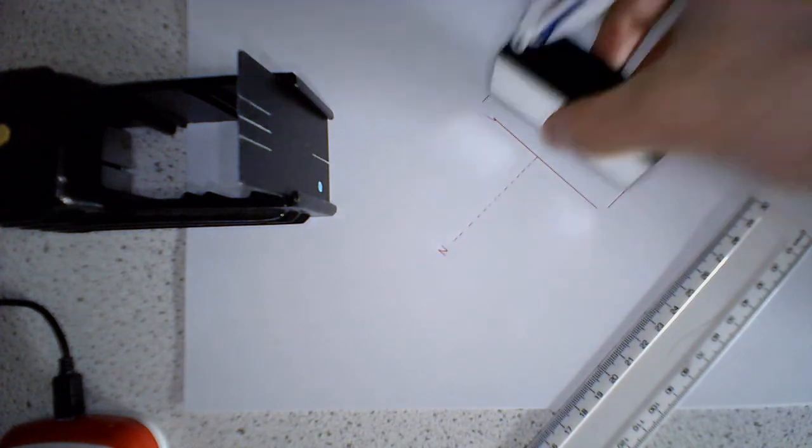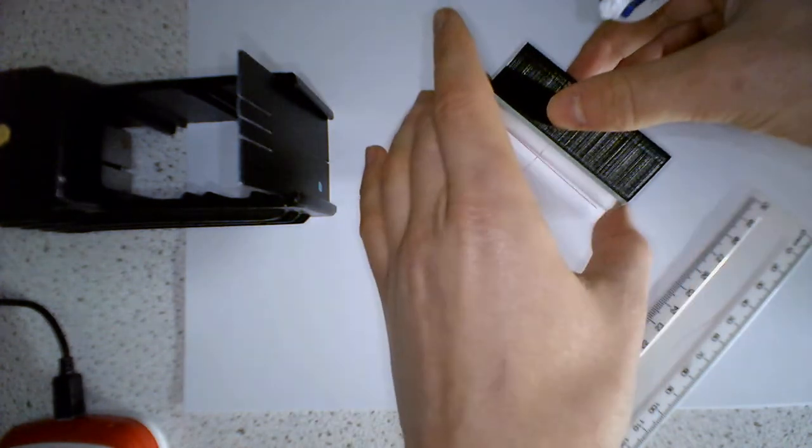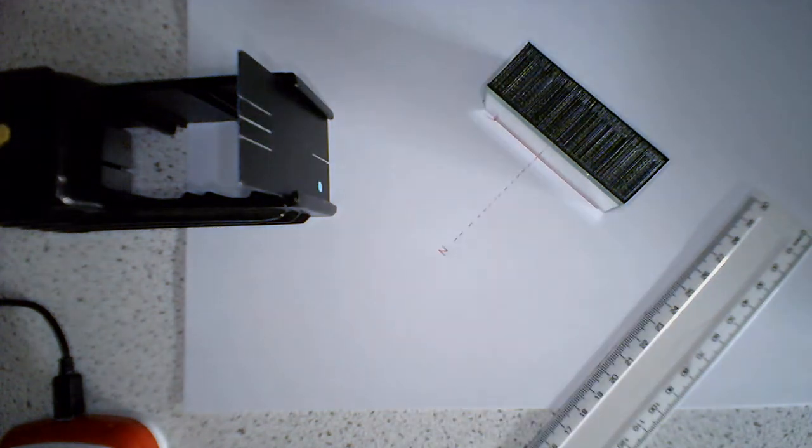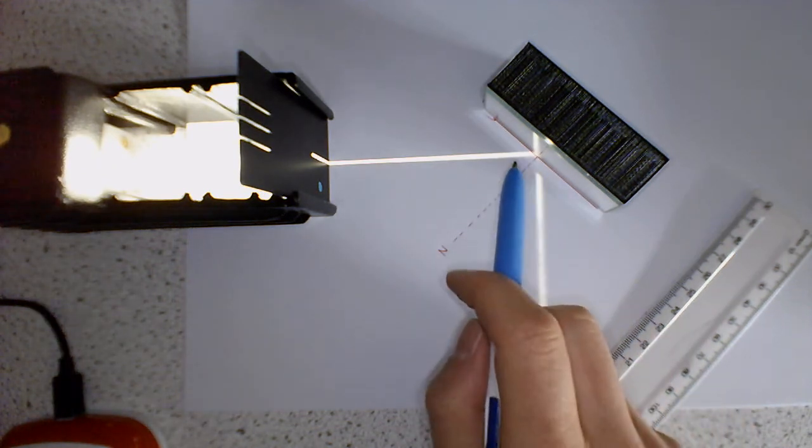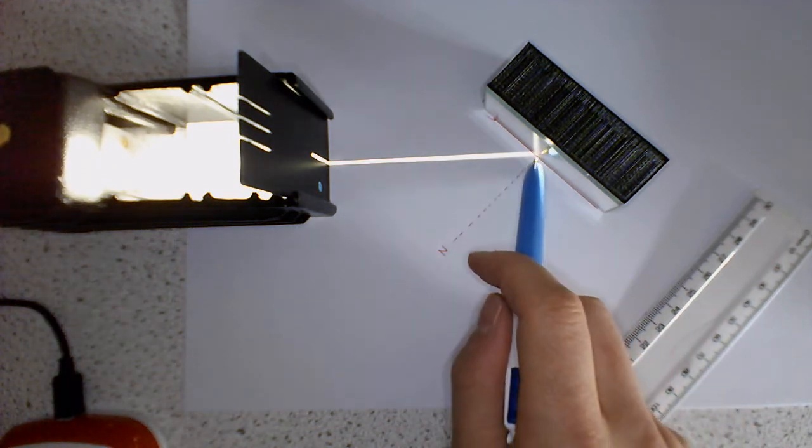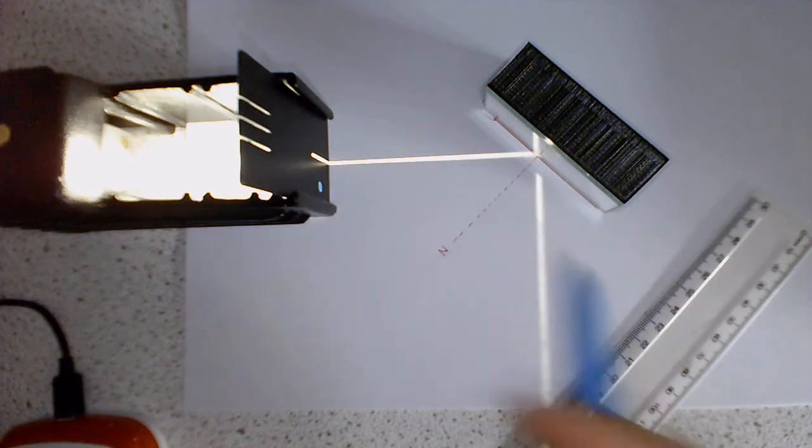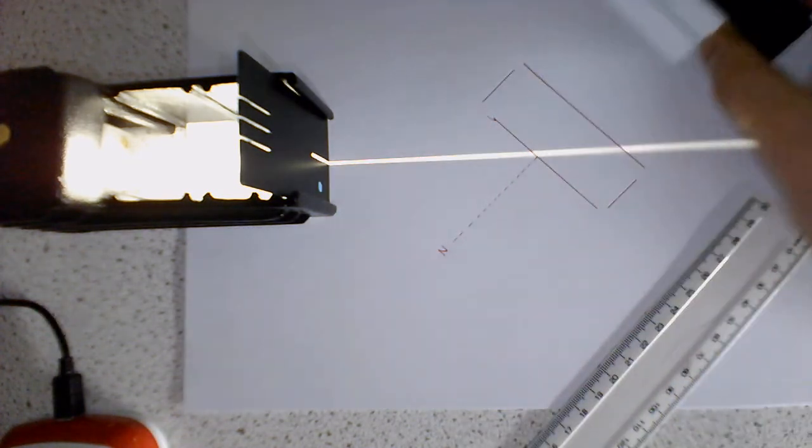So what I'm going to do is put the mirror back in. There. And I'm going to turn our light source on. So what we're aiming to do is we want the light to hit where the normal meets the boundary.